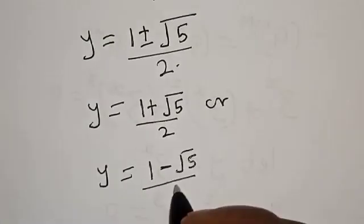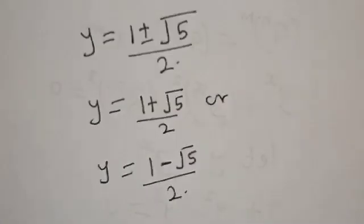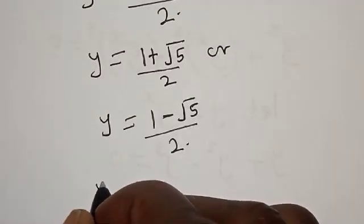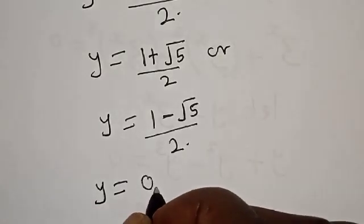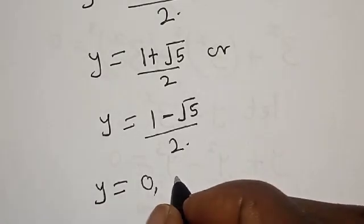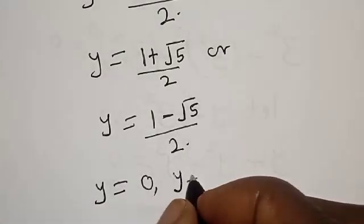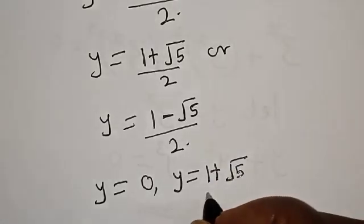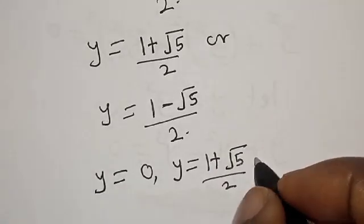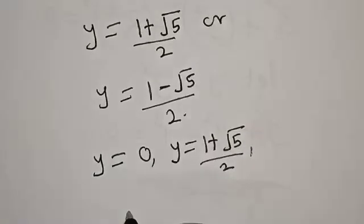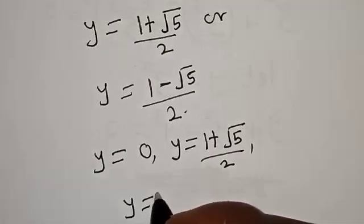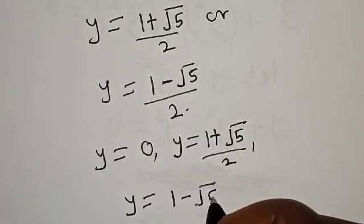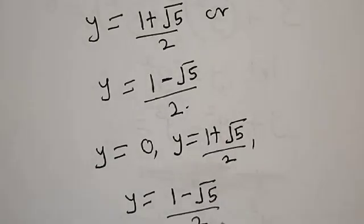Our three values of y are: y equals 0, y equals 1 plus root 5 over 2, and y equals 1 minus root 5 over 2. Now remember that we set 3 raised to power s equal to y, so we substitute back for each case.